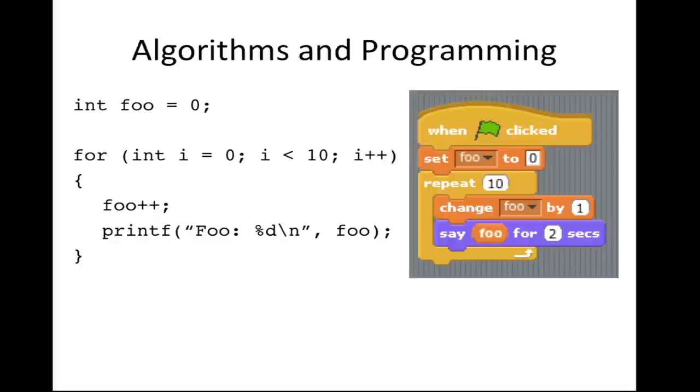Two examples of programming: Scratch, which is what we did in Week 0, is a way of implementing an algorithm — in this case printing the numbers 1 through 10 — even though we don't type out the code explicitly. In C, we do the same thing. These are functionally equivalent, just written in different languages or syntax.